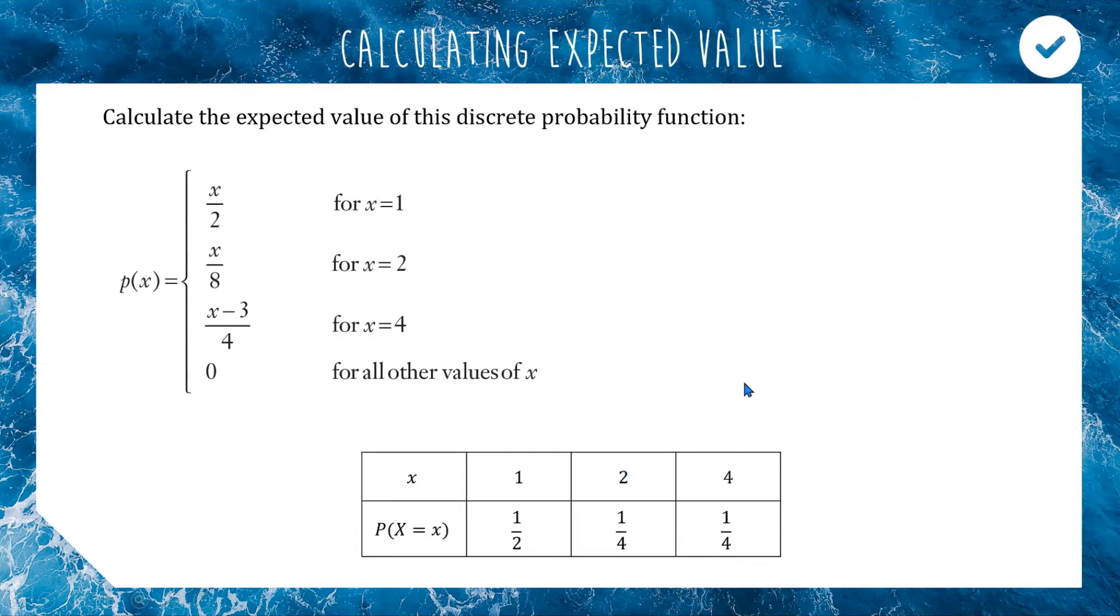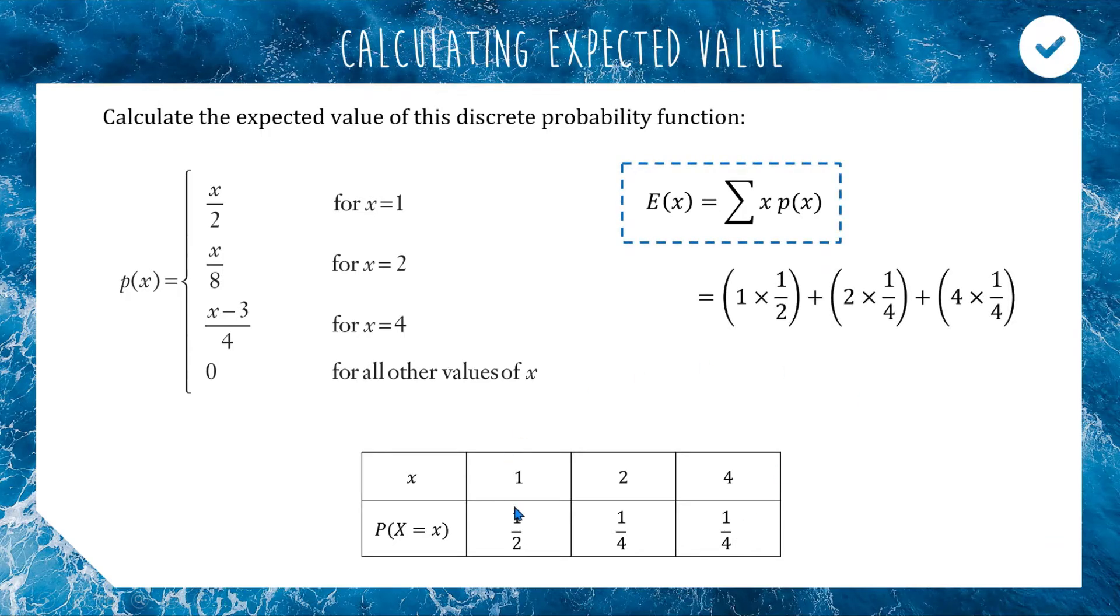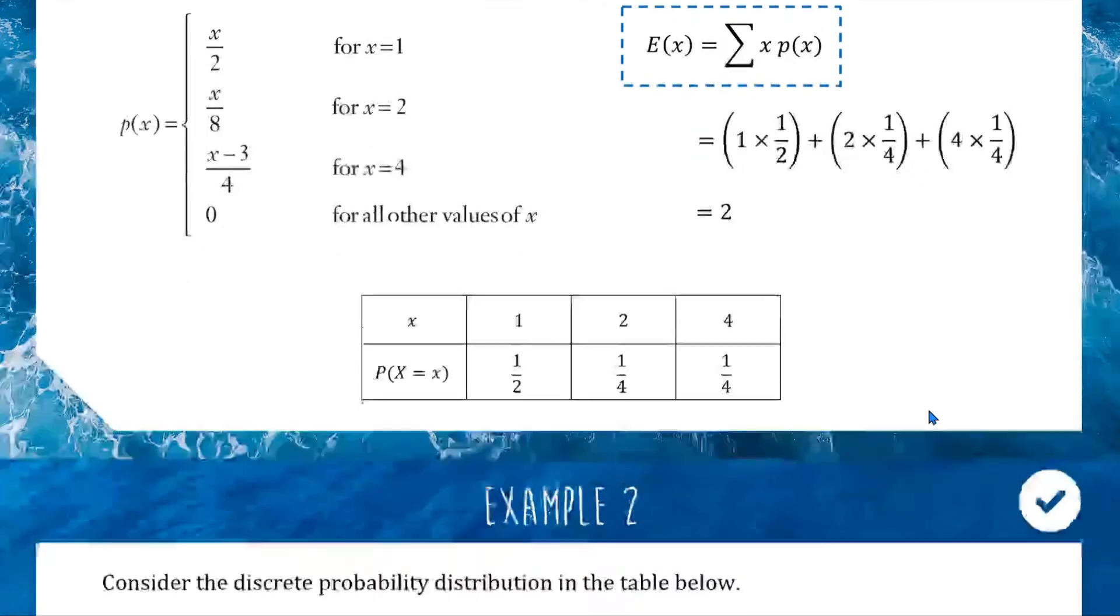The formula we're using to find expected value looks like this: expectation of x equals sigma, a Greek letter signifying to do the sum. This says take the sum of all your x values, which are your outcomes, multiplied by their probabilities. So we're doing 1 times one half, 2 times one quarter, and 4 times one quarter. Add those three numbers together and we get an answer of 2.